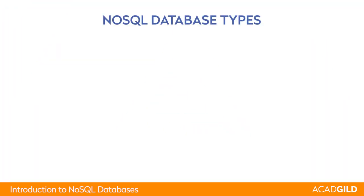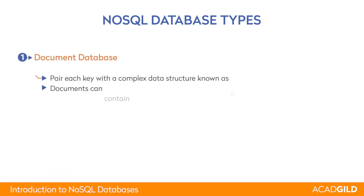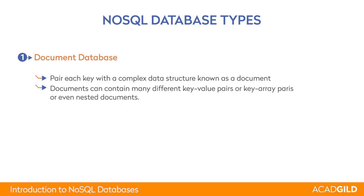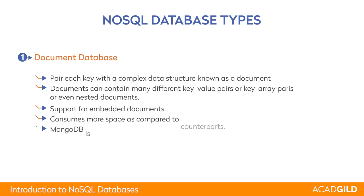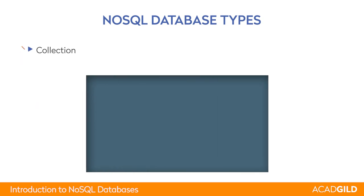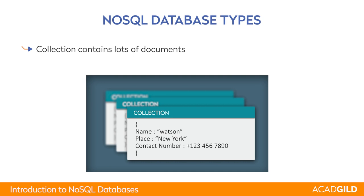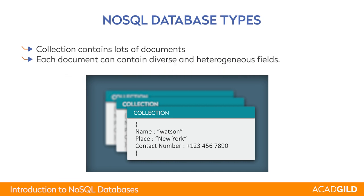Now let's explore the NoSQL Database Types. The first type is Document Databases. Every entry, every message, every row of the RDBMS is like one document containing key-value pairs. They can have nested or embedded documents. MongoDB is an example. Each document contains diverse and heterogeneous fields — a collection is like a table, and different documents within the same collection can have different key-value pairs, making the schema dynamic and heterogeneous.